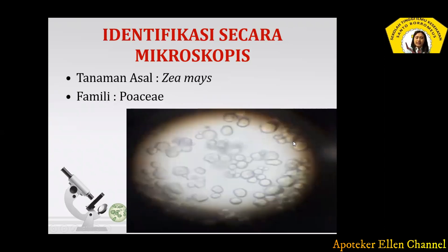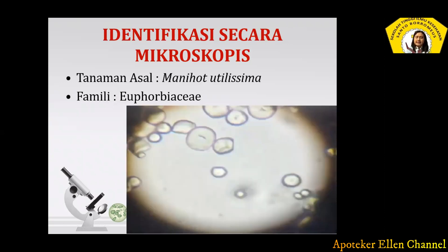Ini tanaman Zea mays atau jagung, familinya Poaceae, seperti ini. Dia lebih dempet, lebih rapat. Jadi, kalau kalian menemukan amilumnya agak rapat, kemungkinan besar dia adalah Zea mays. Manihot utilissima atau ubi atau singkong, familinya Euphorbiaceae. Ini berbentuk topi baja — sering disebut topi baja karena beberapa jenis amilumnya tidak bulat, tapi seperti topi baja, seperti ada siku. Jadi ada bulat, ada sikunya, seperti topi baja. Sebutannya amilum topi baja.